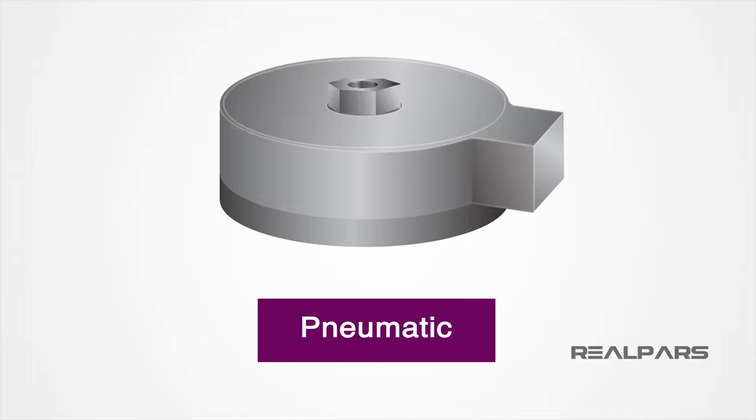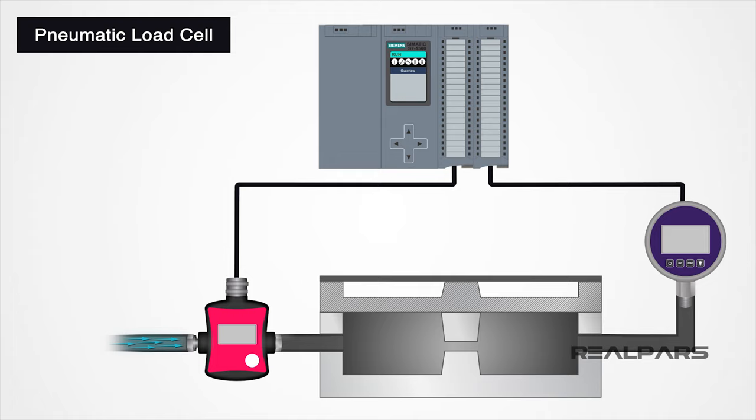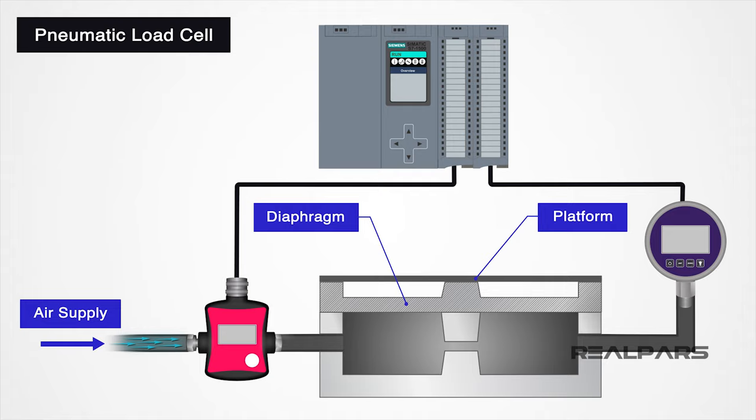Let's begin by looking at how a pneumatic load cell works. Since it is pneumatic, we know that it will deal with air pressure. A pneumatic load cell consists of an elastic diaphragm which is attached to a platform surface where the weight will be measured.